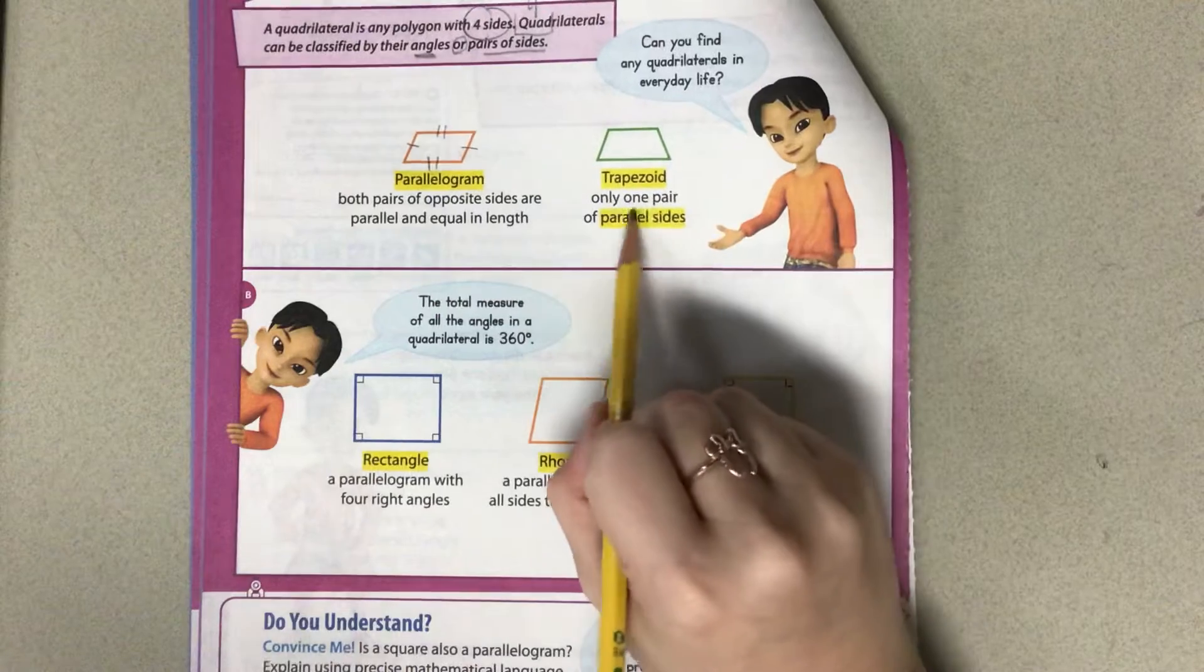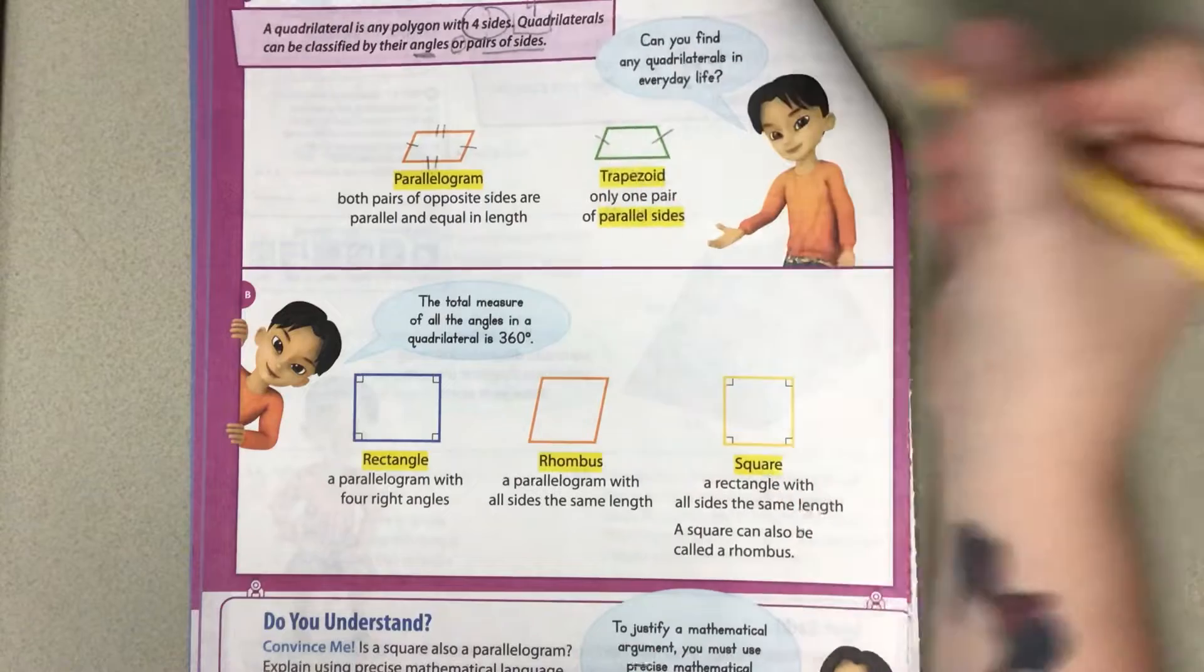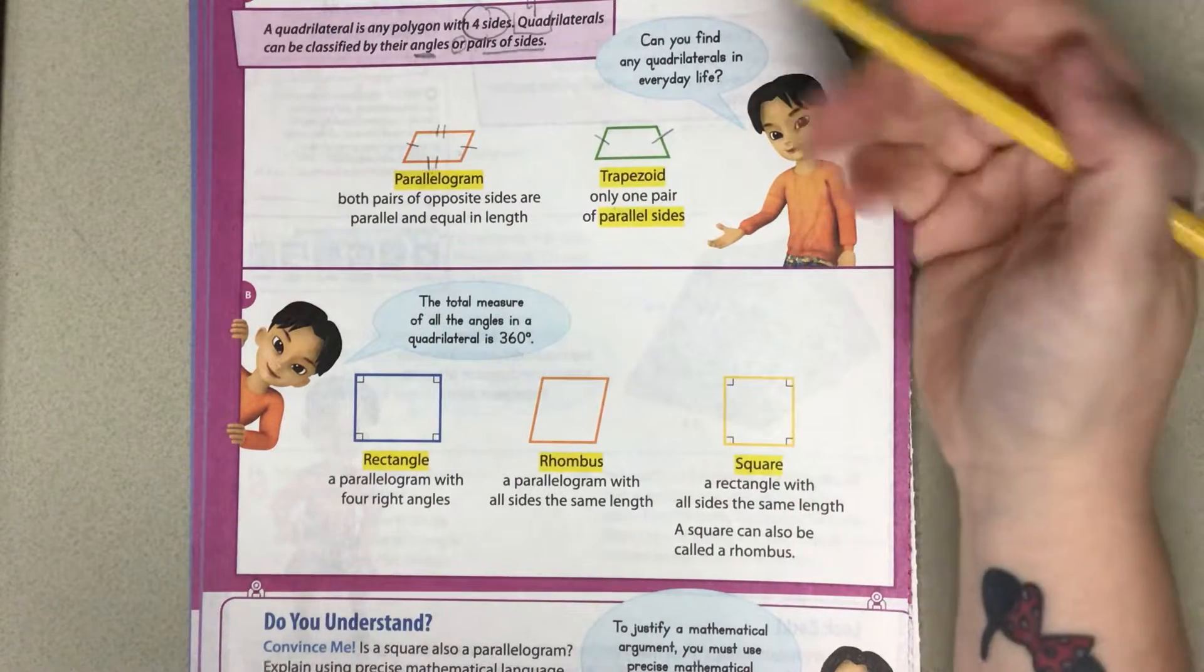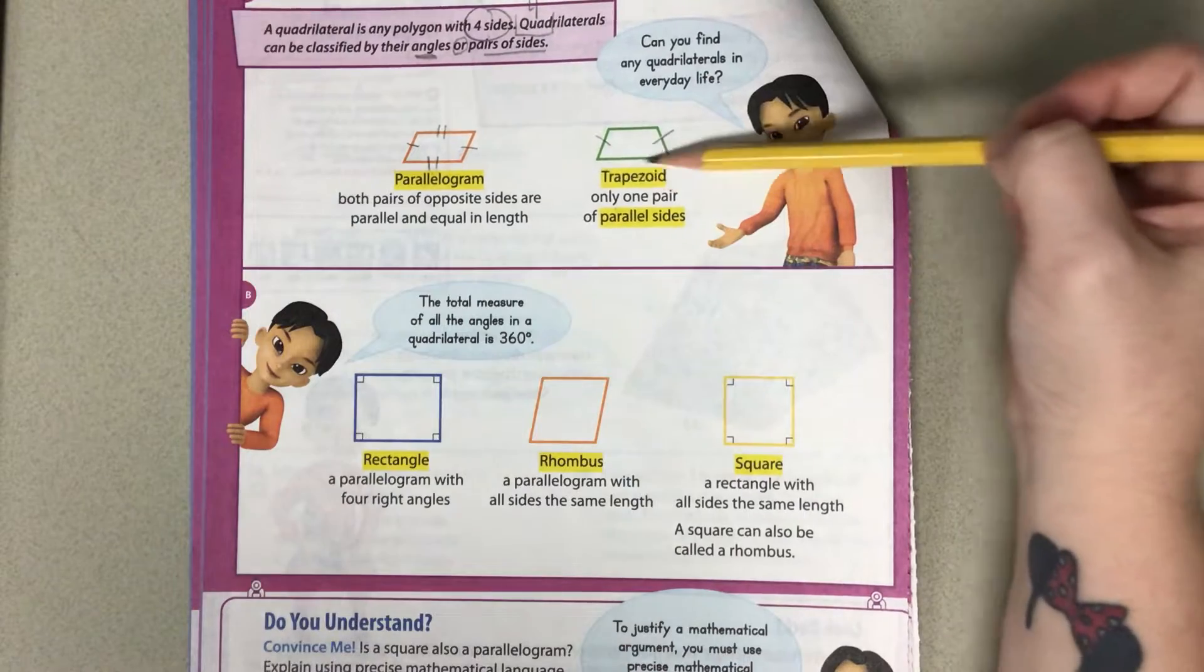If we look here at a trapezoid, it only has one pair of parallel sides, and that's going to be this pair here. These two are parallel sides, but they're still a quadrilateral because it has four sides, but it's named a trapezoid.